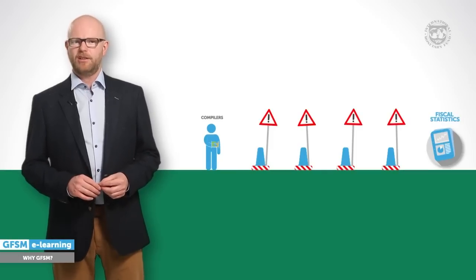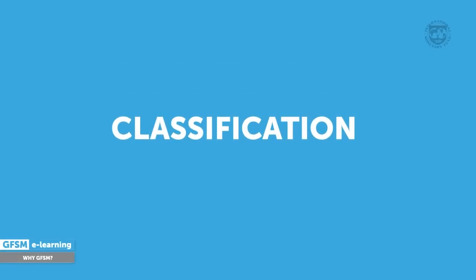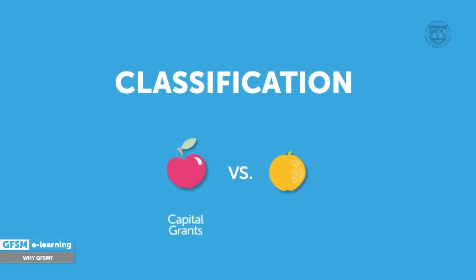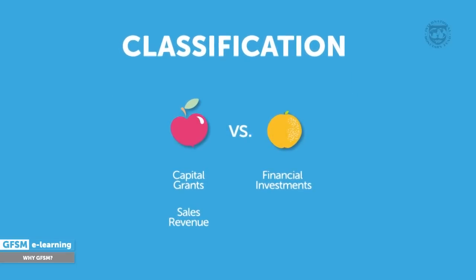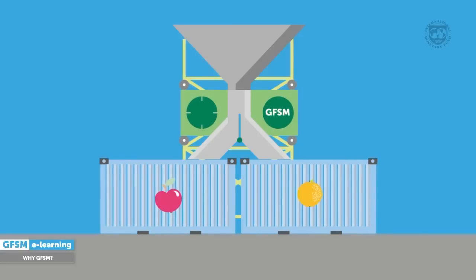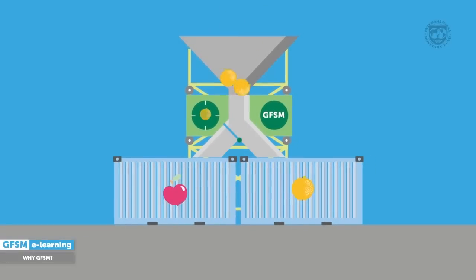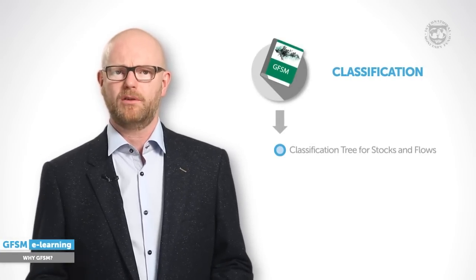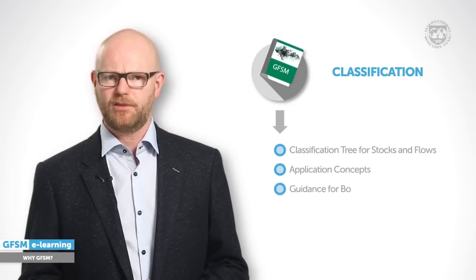The third challenge is classification. To facilitate sound economic analysis, we need to be sure that we're not comparing apples and oranges — or rather, that we separate capital grants from financial investments, sales revenues from taxes, tax breaks from subsidies. National data sources are often set up for specific reporting or management purposes. Thus, national terminology may not be in line with standard concepts, which can make it difficult to correctly classify fiscal events. With a systematic classification and guiding principles, fiscal statistics present data according to the inherent economic substance. The GFSM offers a fully articulated classification tree for all stocks and flows, delivering the concepts for application and guidance for treating borderline cases.